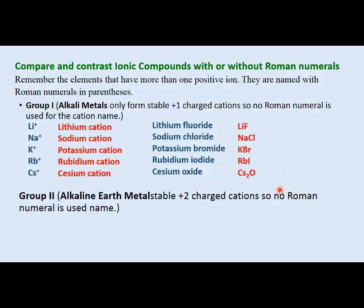Other cations that only form one possible stable charge are the Group 2 alkaline earth metals. They're stable with +2 charged cations, and no Roman numeral would be used. Magnesium, calcium, strontium, and barium all have +2 as their only predicted stable charge. I would not use Roman numerals with these when writing ionic compound names.